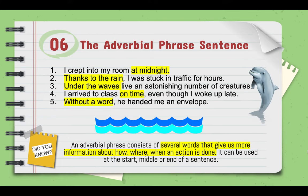An adverbial phrase sentence is a phrase consisting of several words that give us more information about how, where, or when an action is done. You can place these words at the beginning, middle, or end of your sentence. For example: 'I crept into my room at midnight' gives us information about when. The last example, 'he handed me an envelope without a word,' tells us how the action was done. You can also start with just an adverb — for example: 'Silently, he handed me an envelope.'